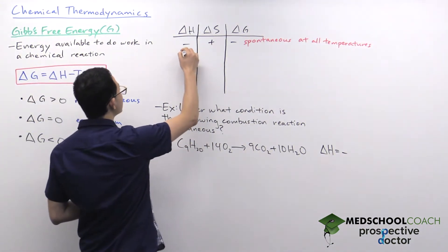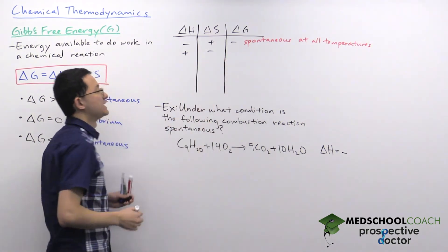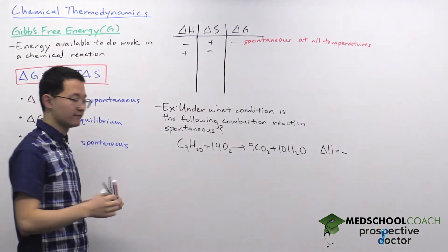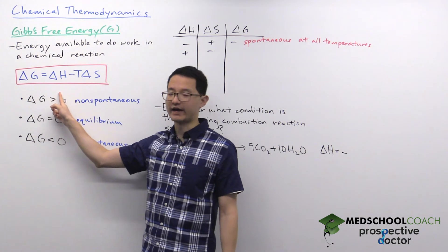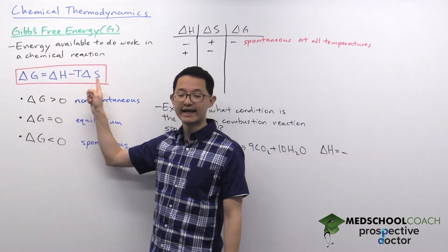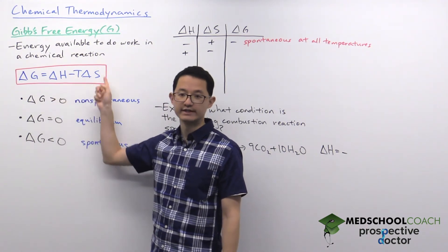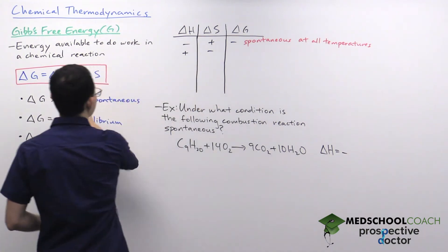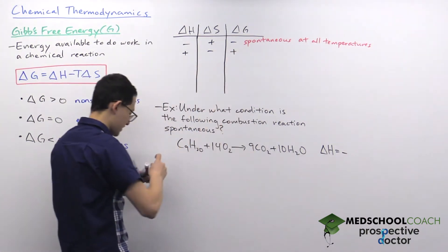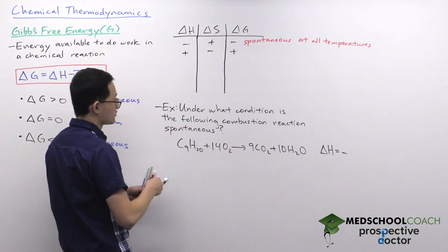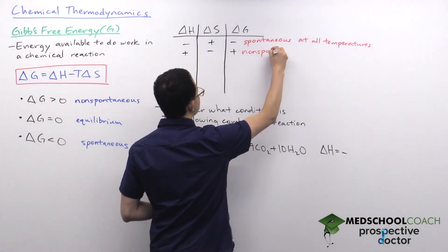Now consider the opposite: if a reaction is endothermic and the entropy change is negative, you have a positive enthalpy term and you're subtracting a negative value — a double negative, which is addition — so that will always give you a positive Gibbs free energy change, meaning this reaction is non-spontaneous at all temperatures.